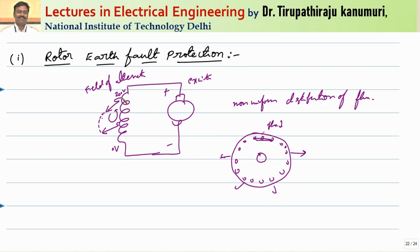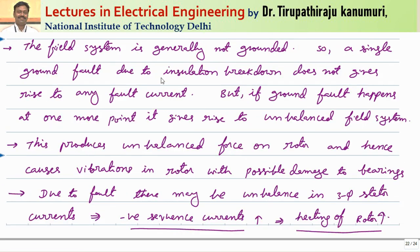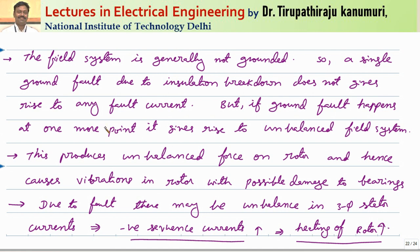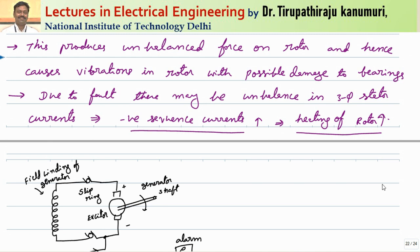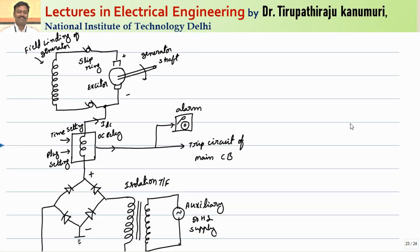Whenever a single ground fault happens between the rotor field poles and the rotor core, it should immediately be disconnected so that it will not develop into another fault. A single ground fault due to insulation breakdown does not give rise to any fault current. But if a ground fault happens at a second point it gives rise to an unbalanced field system. This produces unbalanced force on the rotor and causes vibrations with possible bearing damage. Due to the fault, negative sequence currents will heat both stator and rotor, so it should be protected at an early stage.